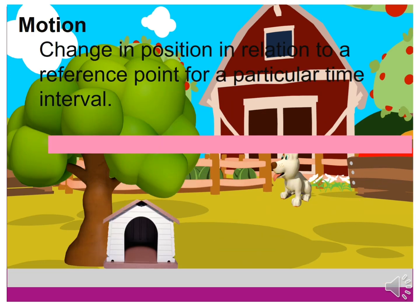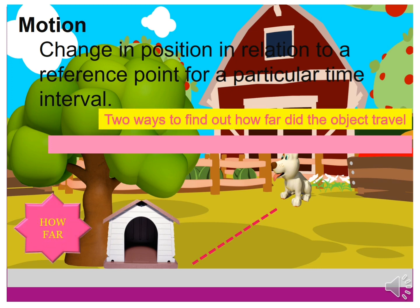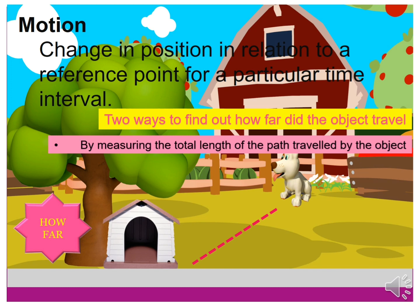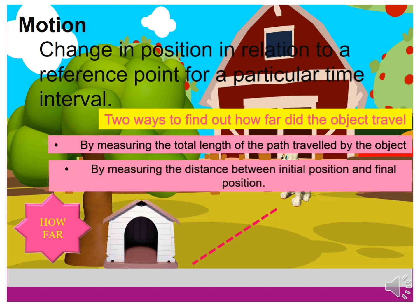Let us start describing motion by finding out how far the object traveled after it changes its position. There are two ways to find out how far the object traveled. First, by measuring the total length of the path traveled by the object, which is called the distance. Second, by measuring the distance between initial position and final position, which is called the displacement.